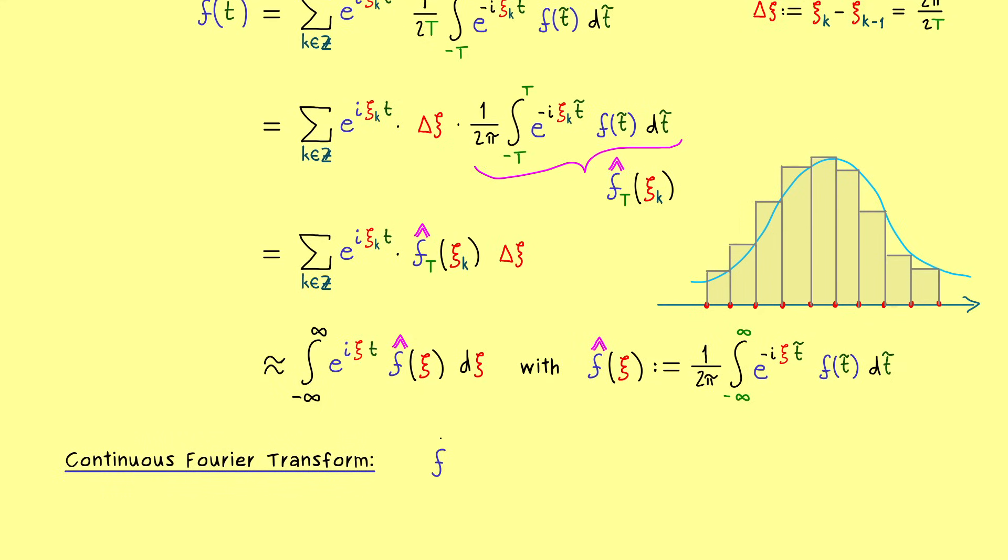However, since the whole situation here is symmetric, with two integrals on both sides, this factor 1 over 2π is a little bit annoying. Therefore, one usually distributes this factor to both parts to keep this symmetry. Therefore, the definition of the Fourier transform of f can be written with a factor 1 over the square root of 2π in front of it. Otherwise nothing changes,